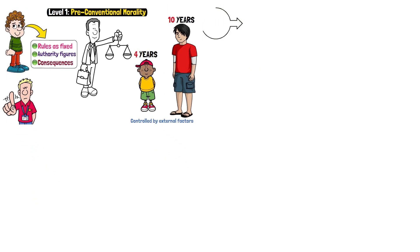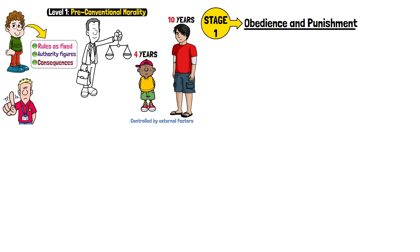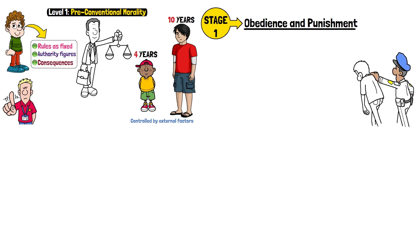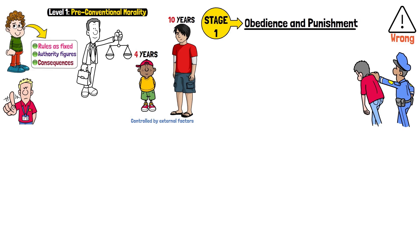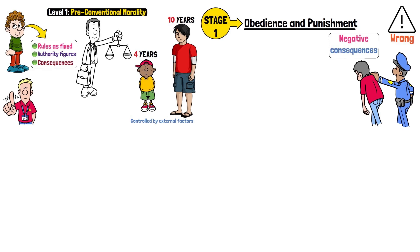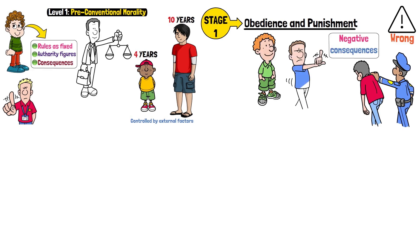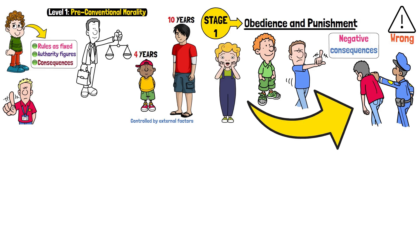Stage 1 – Obedience and Punishment. Morality is driven by avoiding punishment. Actions are considered wrong if they lead to negative consequences. Children are concerned with not getting caught, and morality is tied to fear of punishment.